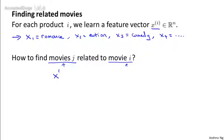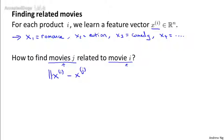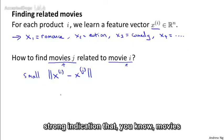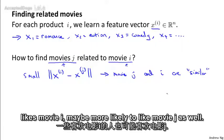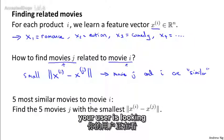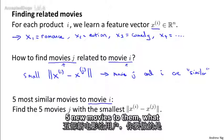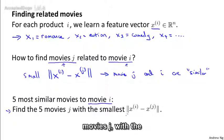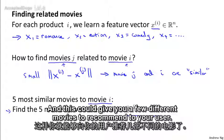In particular, movie i has a feature vector xi, and so if you can find a different movie j so that the distance between xi and xj is small, then this is a pretty strong indication that movies j and i are somehow similar, at least in the sense that someone that likes movie i may be more likely to like movie j as well. So just to recap, if your user is looking at some movie i and if you want to find the five most similar movies to that movie in order to recommend five new movies to them, what you do is find the five movies j with the smallest distance between the features between these different movies. And this could give you a few different movies to recommend to your users.